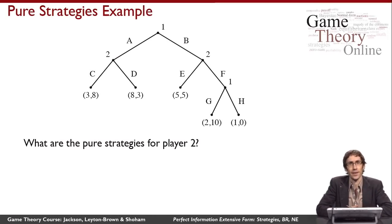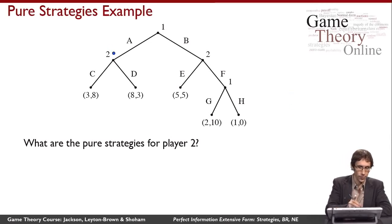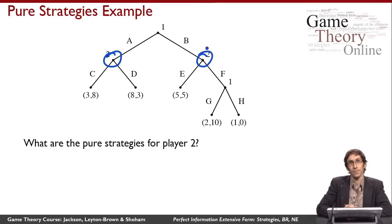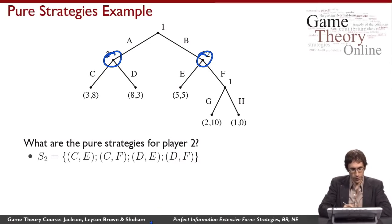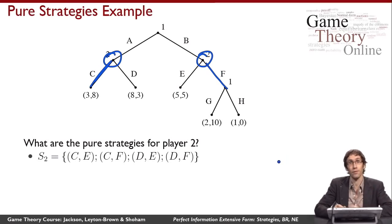Let's do a more complicated example. What are the pure strategies for player two? Player two has two choice nodes. The pure strategies for player two are the cross products of the action sets at each of those choice nodes. For example, the pure strategy CF means at this choice node player two plays C, and at this choice node player two plays F. Because there are two sets of size two, there are a total of four pure strategies.